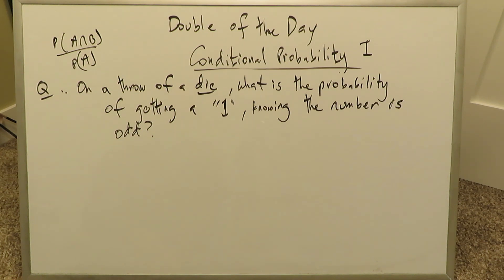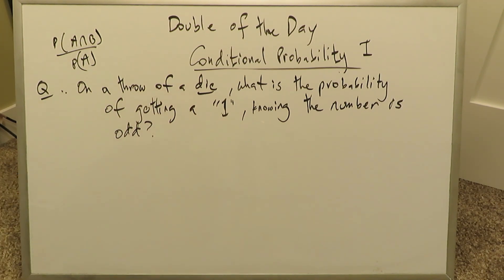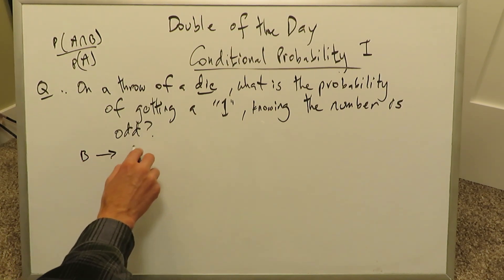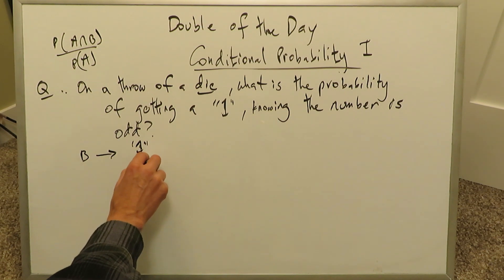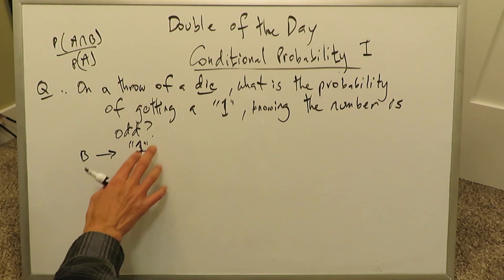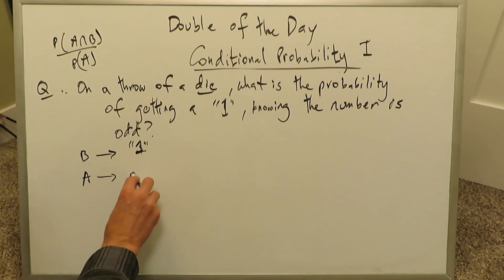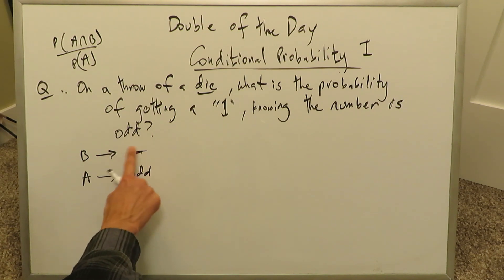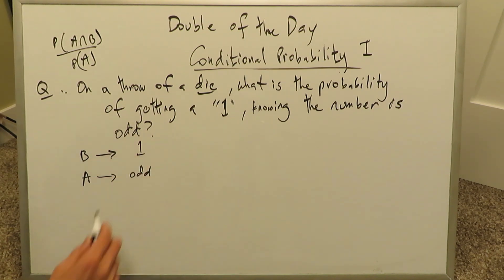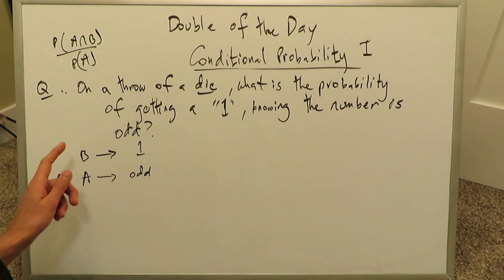Let's look at the first question: on a throw of a die — that six-sided cube with numbers one through six — what is the probability of getting a 1 knowing the number is odd? Let B be the event you want: getting a 1. Let A be the event that has occurred: the number will be odd.